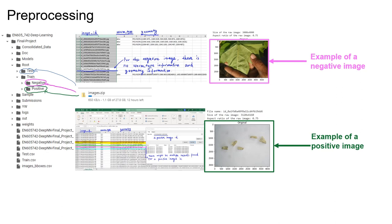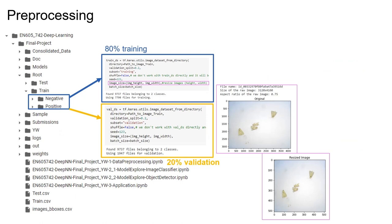The competition also provides a CSV file with polygon locations of the worms in each image. This information is only provided for positive images — for negative images there is no worm type or geometry information. In this slide we can see the CSV file with worm type and image identification by image ID.